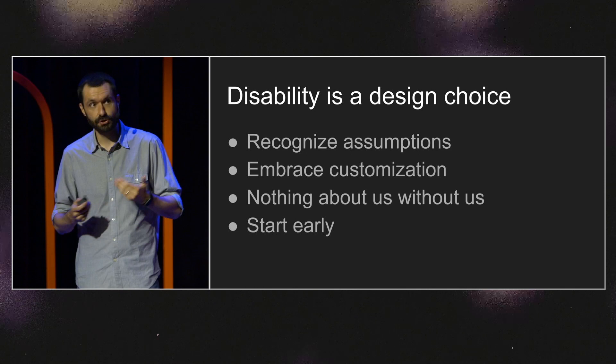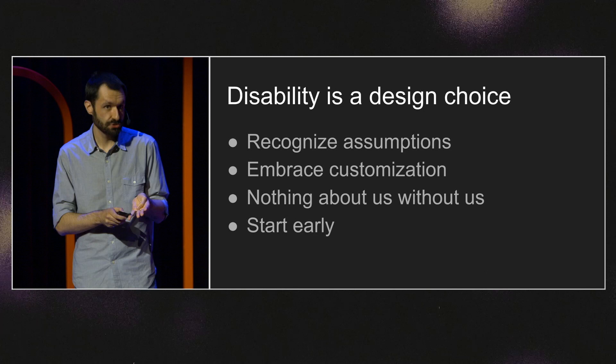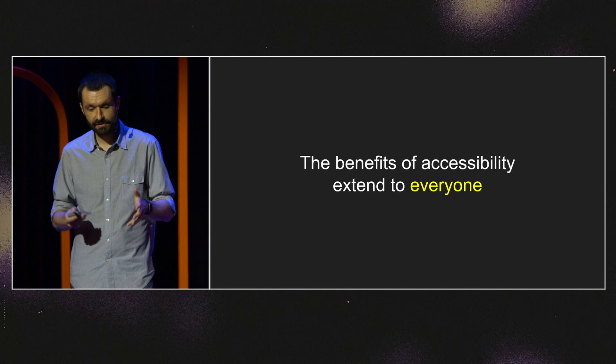All of this feedback would have been much more expensive to develop and engineer if we tried to do it later in development. So — first thesis: disability is a design choice. You can overcome it by recognizing what assumptions you're making about your users, embracing extensive customization, involving people with disabilities in your design process, and starting early, because that only makes it cheaper.